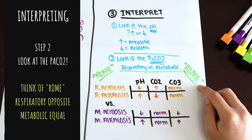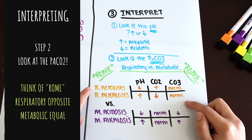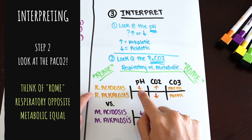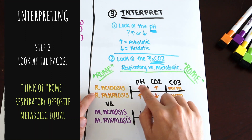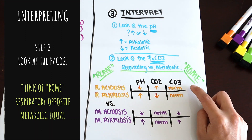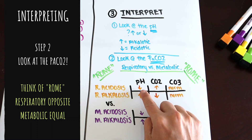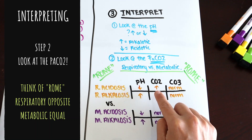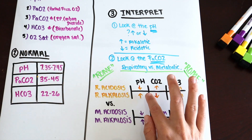Think of the acronym ROME: Respiratory Opposite, Metabolic Equal. In your ABGs, if you are respiratory acidotic — meaning the pH is less than 7.35 — your CO2 is opposite your pH. So when your pH is less than 7.35, your CO2 will be higher than 45, which represents respiratory acidosis.